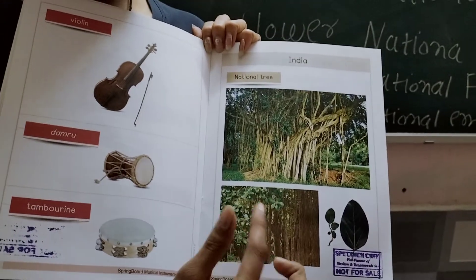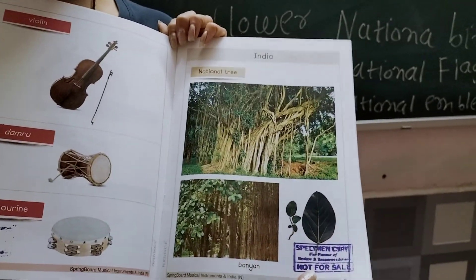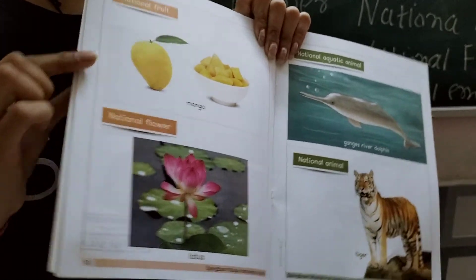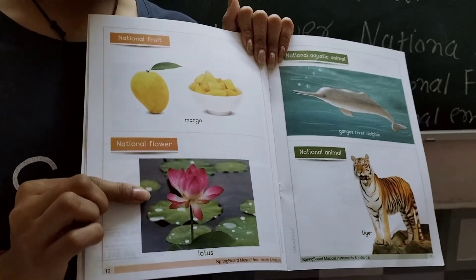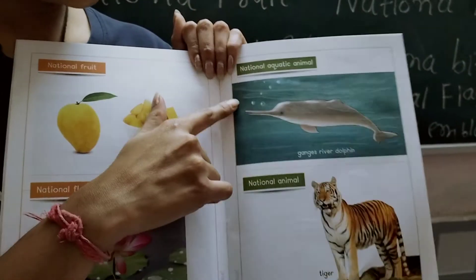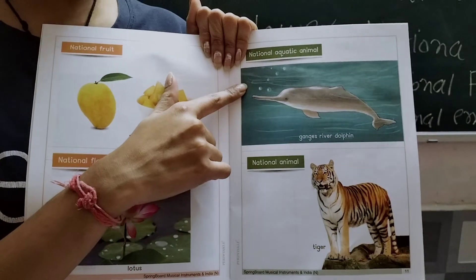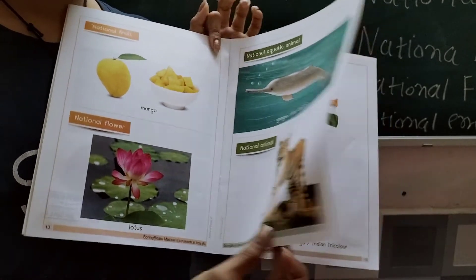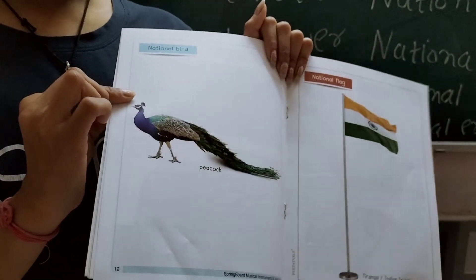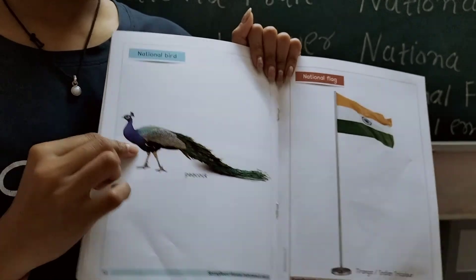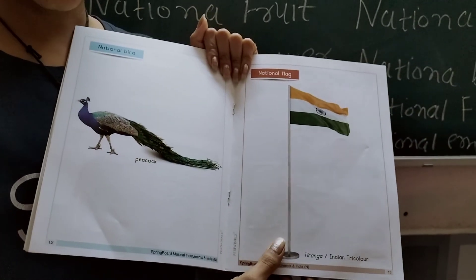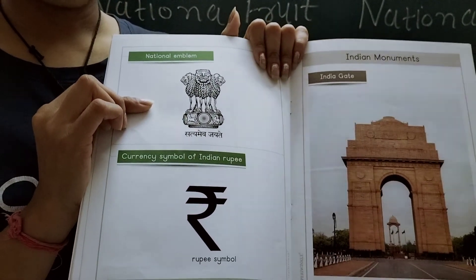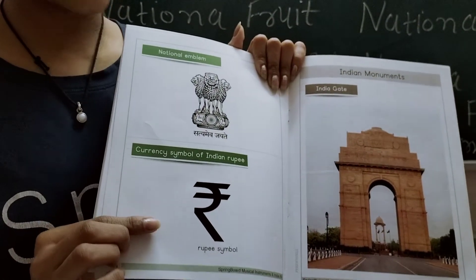India — what is our national tree? This one is the national tree. Next is the national fruit: mango. National flower: lotus. Then national aquatic animal, national animal: tiger, national bird, national flag, national anthem, and last is national currency.